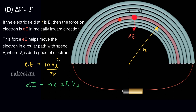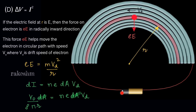Consider a small piece carrying current dI at drift speed Vd. We can write dI equals N·e·dA·Vd, where dA is the cross-sectional area. We can also write dI as V0/dR, which equals V0·t·dA divided by rho·pi·r. This equals N·e·dA·Vd. Cancelling dA on both sides gives us the third equation.